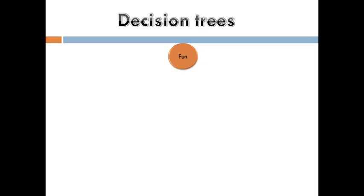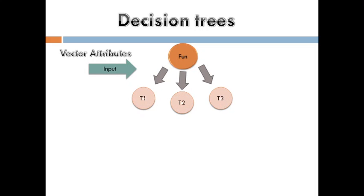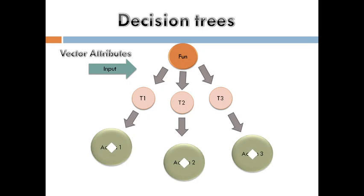Consider a function. This function takes input from the vector attributes. Vector attributes are nothing but tests — test 1, test 2, test 3, and so on. By applying test 1, test 2, test 3, it will take a decision.